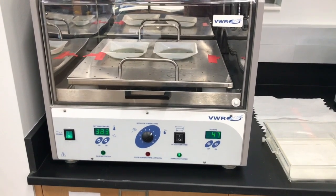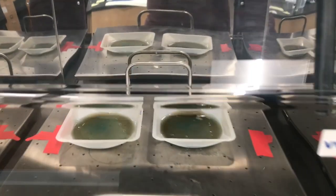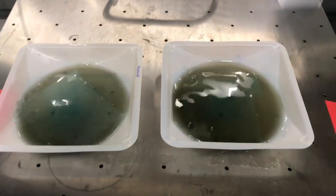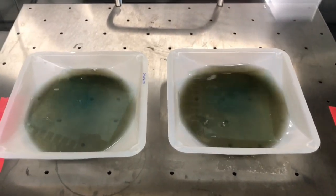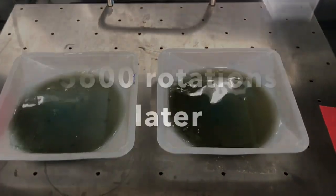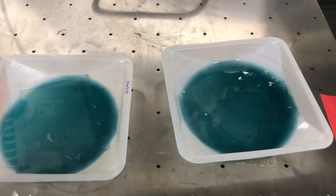What this is going to do is the Coomassie stain is going to interact with the proteins like they do with the protein quantification lab and bind to them, and it's going to give us a blue color that we're actually going to be able to see them on the gel.